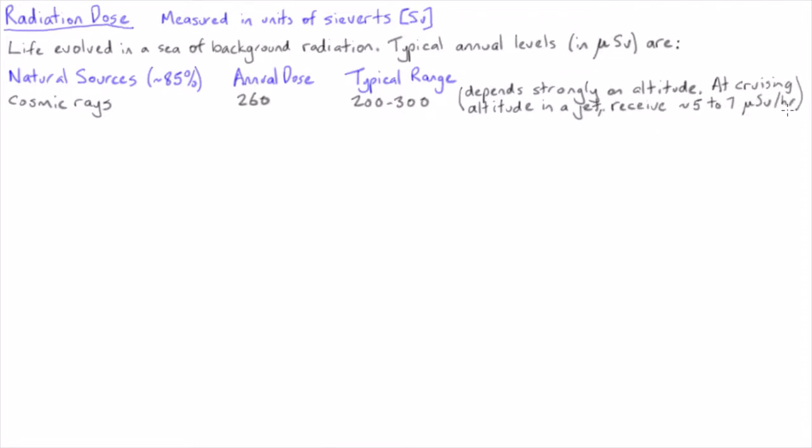In fact, at cruising altitude in an airplane, the dose rates can be as high as 5 to 7 micro sieverts per hour, a level that is well and truly above the recommended public limit for radiation exposure. This seems like madness. Why then are you allowed to fly in a plane? Isn't it dangerous?